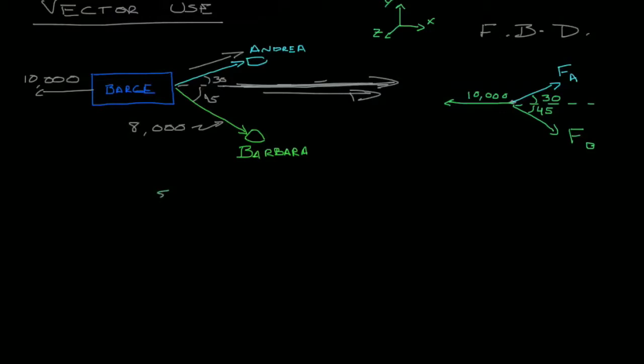I'll start us off on the first one. The sum of the forces in the x direction is equal to the mass times the acceleration in the x direction. Now I've told you that we have a constant 10,000 pounds, it's just cruising along, which means there's no acceleration. So this is going to be zero.